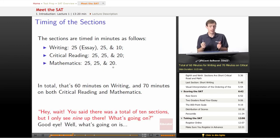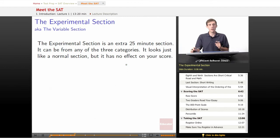Now, if you're really sharp and paying a lot of attention, you might go, hey wait, you said there were a total of 10 sections, but I only see nine up there. What's going on? Yeah, you caught me. You're right. There's nine sections here, but you'll actually have 10 sections on the test. So what's going on is the experimental section, also called sometimes the variable section. The experimental section is an extra 25 minute section. It can be from any of the three categories. It could be a writing section, a critical reading section, or a math section. It's going to look just like a normal section, but it has no effect on your score.